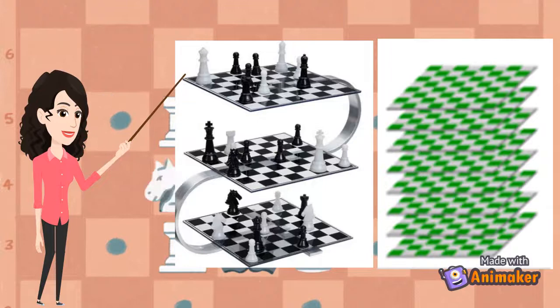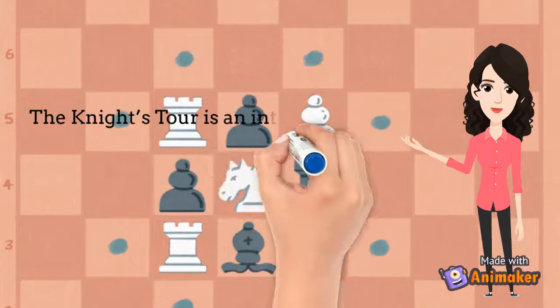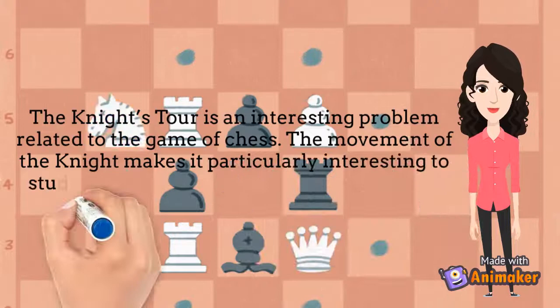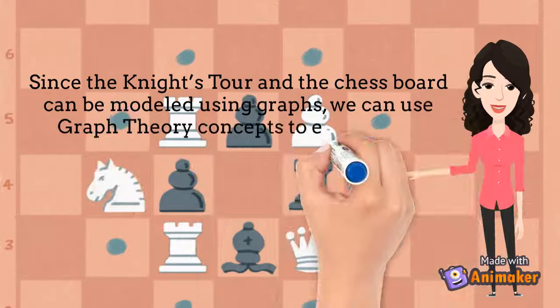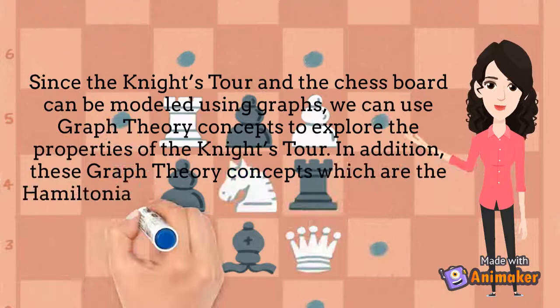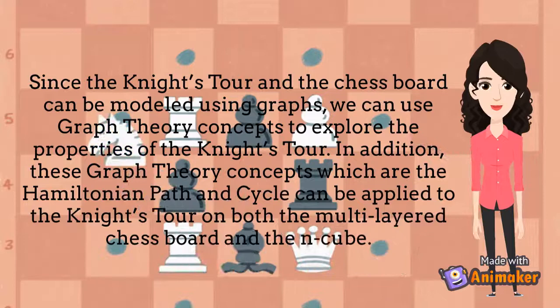Otherwise, one step in one direction, then two steps in the opposite direction. In conclusion, the knight's tour is an interesting problem related to the game of chess. The movement of the knight makes it particularly interesting to study the different types of problems related to the game of chess. Since the knight's tour and the chessboard can be modeled using a graph, we can use graph theory concepts to explore the properties of the knight's tour. This graph theory concept — the Hamiltonian Path and Cycle — can be applied to the knight's tour on both the multi-layered chess and the end cube.